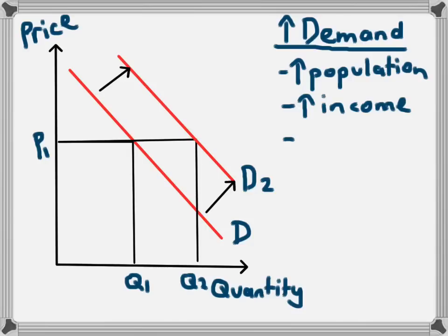Another example might be if there was an increase in the price of a substitute. If this was the market for margarine and the price of butter increased people would buy less butter and more margarine. So the increase in the price of the substitute product causes an increase in demand.